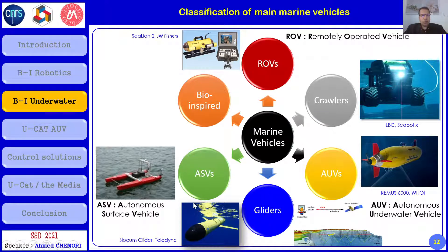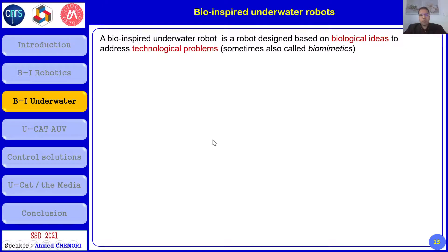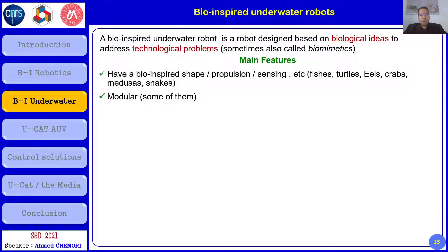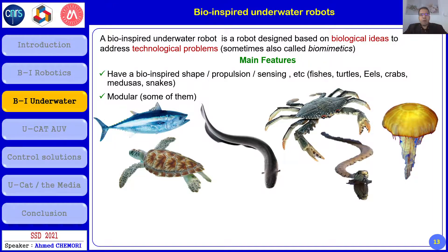The next class is autonomous surface vehicles, which can recharge batteries using solar panels. The last class is bio-inspired underwater vehicles — robots designed based on biological ideas to address technological problems, sometimes called biomimetics. They feature bio-inspired shape, propulsion, or sensing. Examples include robots inspired from fish, turtles, eels, crabs, medusa, and snakes, some of which are modular.